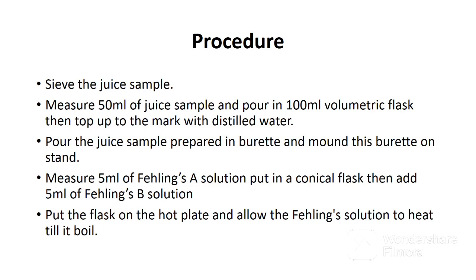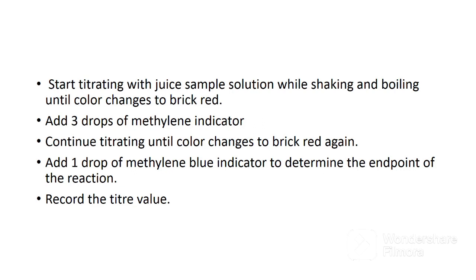Then top up with distilled water to the mark. Pour the prepared sample into the burette and mount this burette on the stand. Measure 5 ml of Fehling solution A and put in a conical flask, then add 5 ml of Fehling solution B. Put the flask on the hot plate and allow the Fehling solution to heat until it boils. After the Fehling solution has boiled, start titrating with the juice sample from the burette while shaking and boiling until the color changes to brick red. Add 3 drops of methylene blue indicator. Continue titrating until the color changes again to brick red. Add a drop of methylene blue indicator to determine the end point. If you add a drop and the solution remains brick red, that means all the copper ions have reacted. Record the titer value.